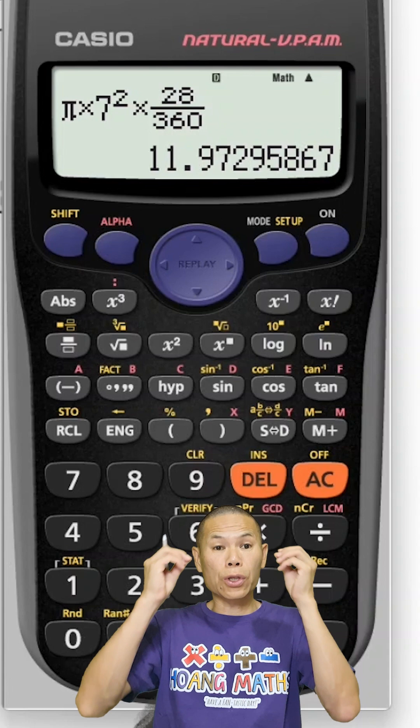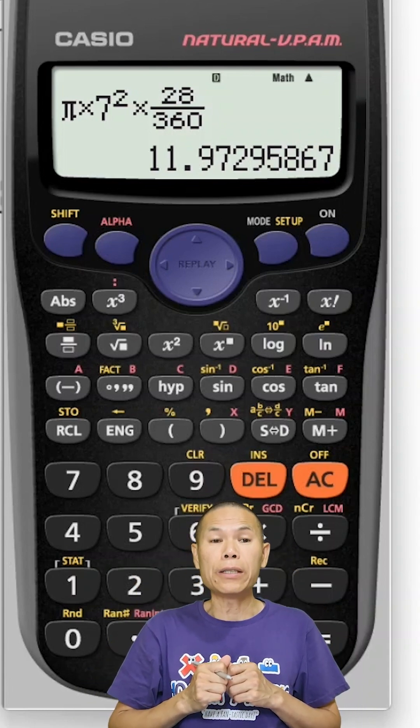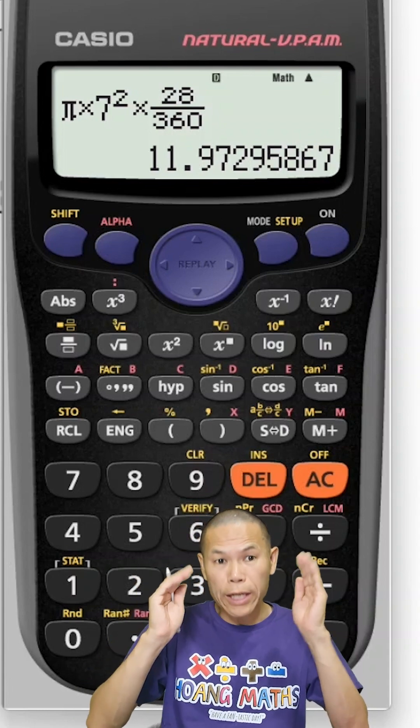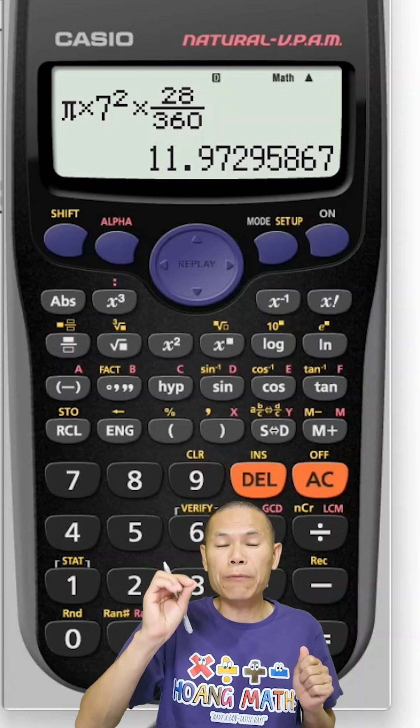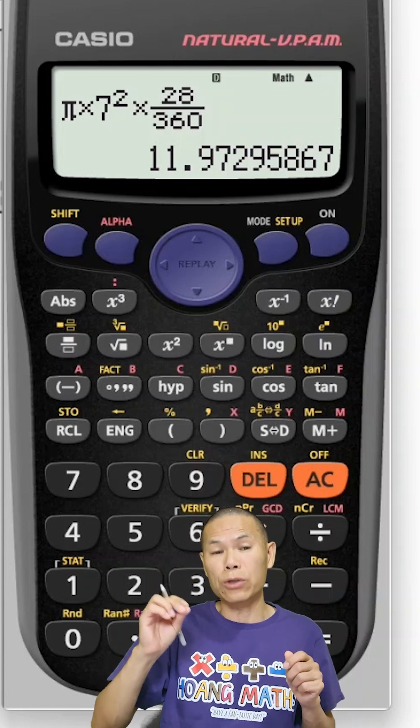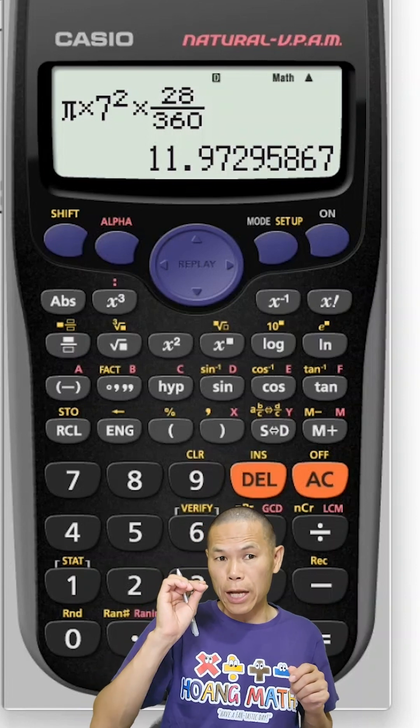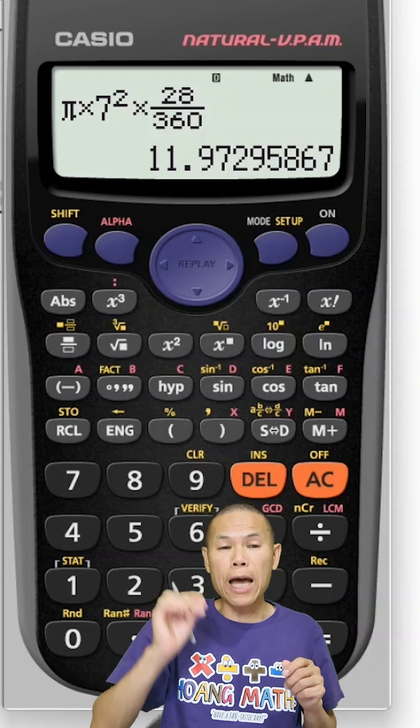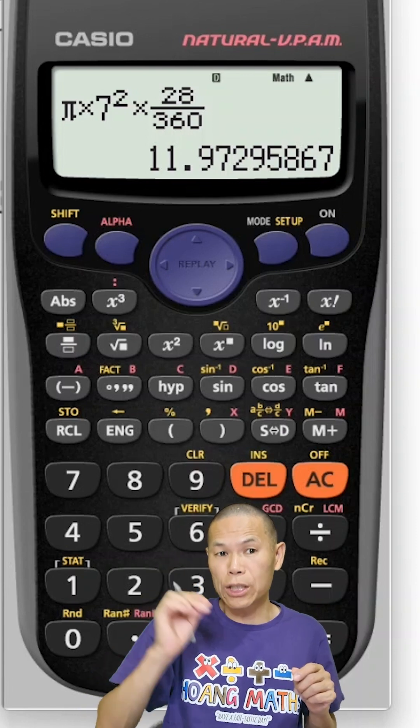So there you go. 11.97 and so on, correct to one decimal place. So the number after 9 is 7. So we add 1 to 9, give me 10. So in other words, 11.97 becomes 12.0.